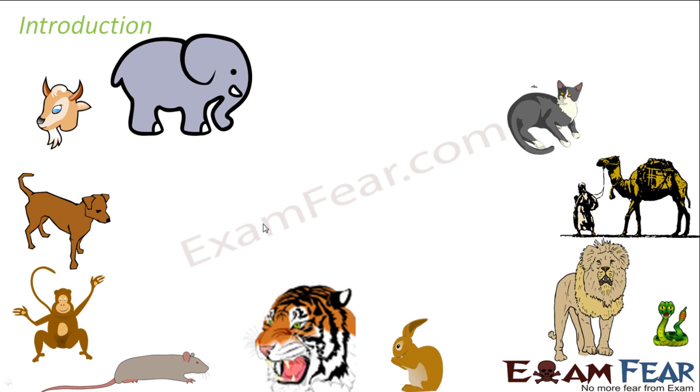We see so many animals around us, starting from very small insects or very small animals like rats or cats, to huge animals like lions, tigers and elephants. We also think of the greenery, the plants which we see around us. So when I talk of this variety, we actually have a huge variety of living organisms.